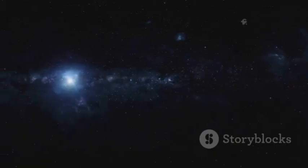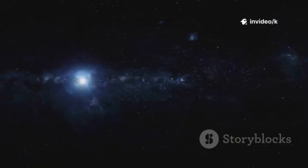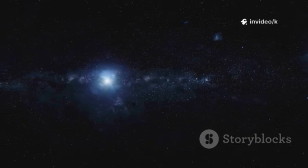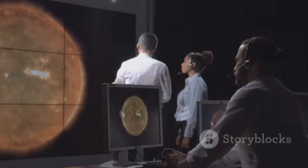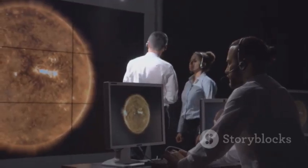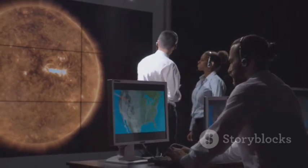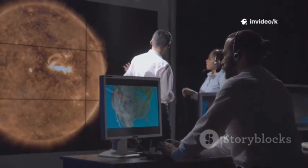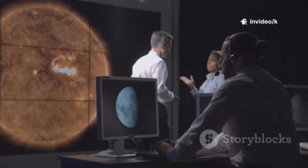Betelgeuse is about 650 light-years away, close enough for us to study the dramatic final stages of a massive star's life. By watching its pulsations, mass loss, and changing brightness, we learn how stars create the elements that make planets and life possible. The iron in your blood and the calcium in your bones were forged in stars like Betelgeuse. So when we look at Betelgeuse, we're looking at our own cosmic origins.